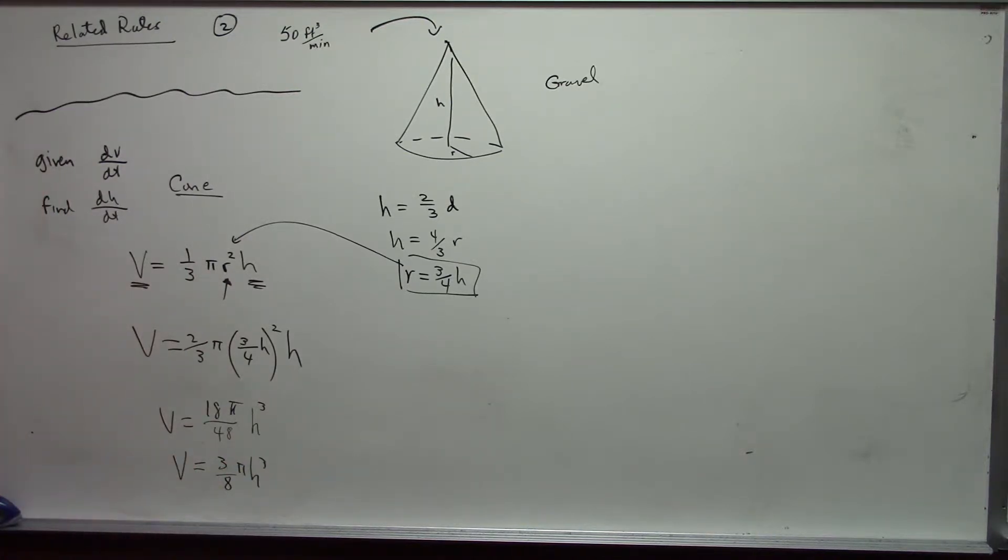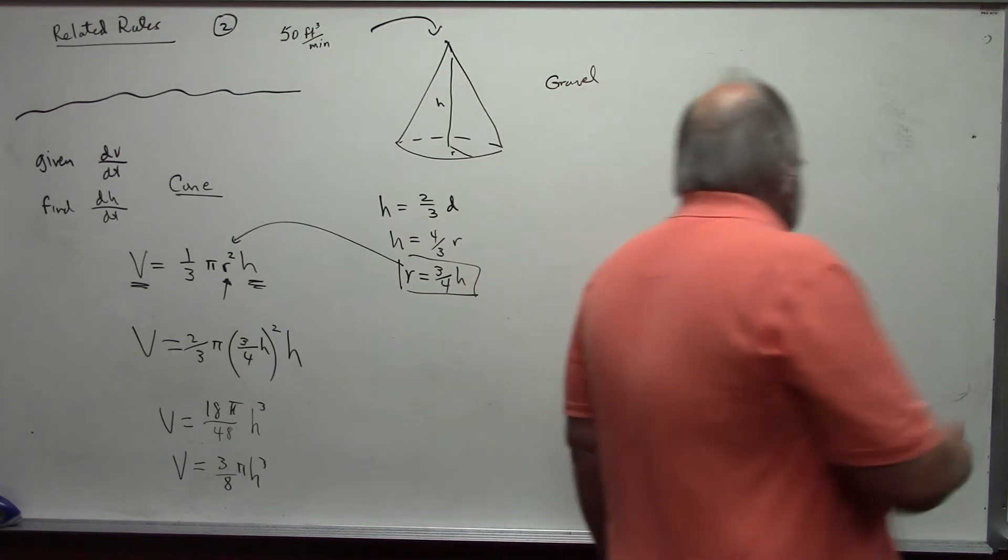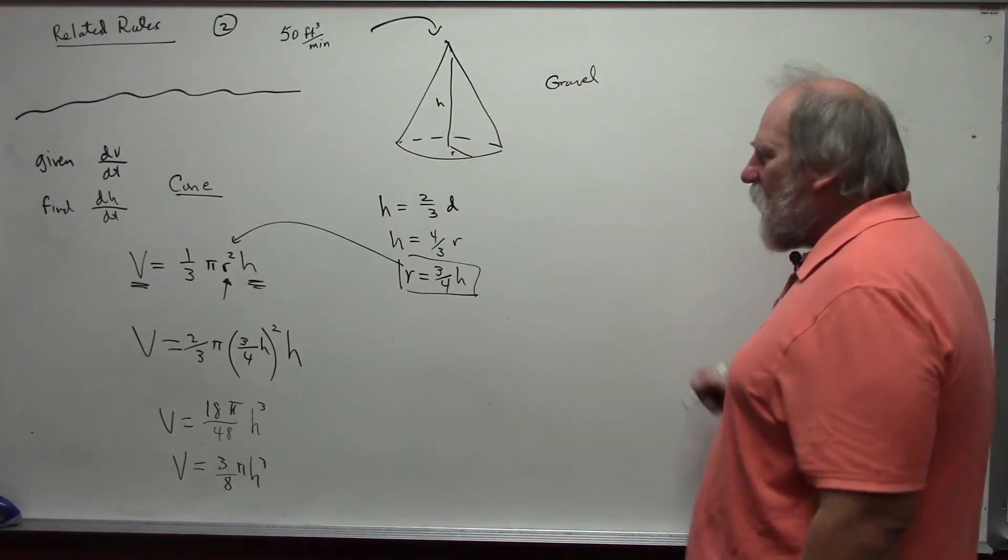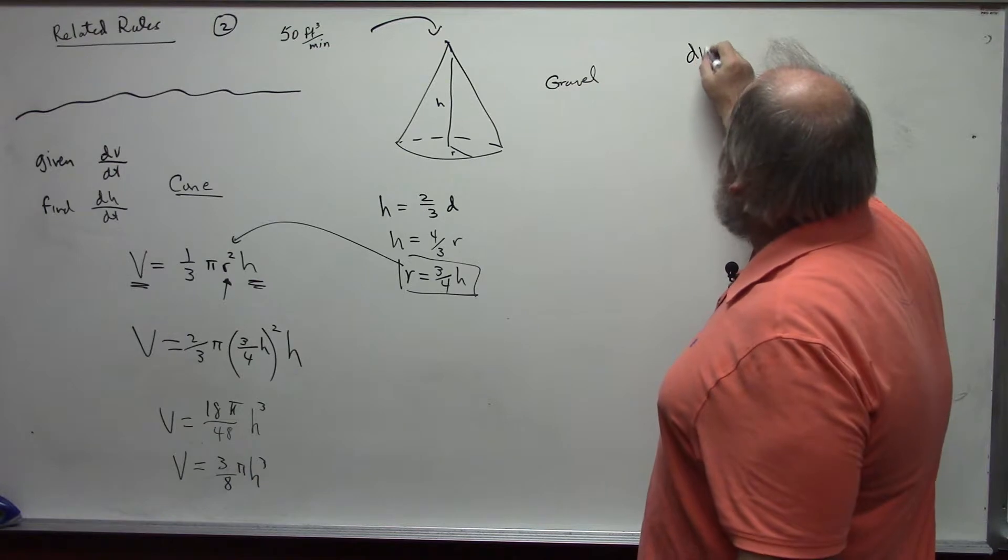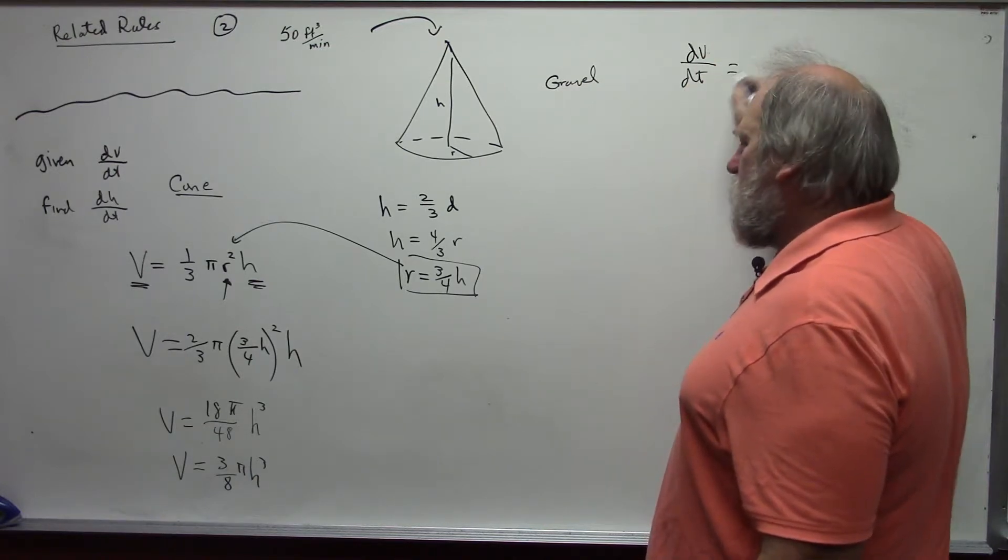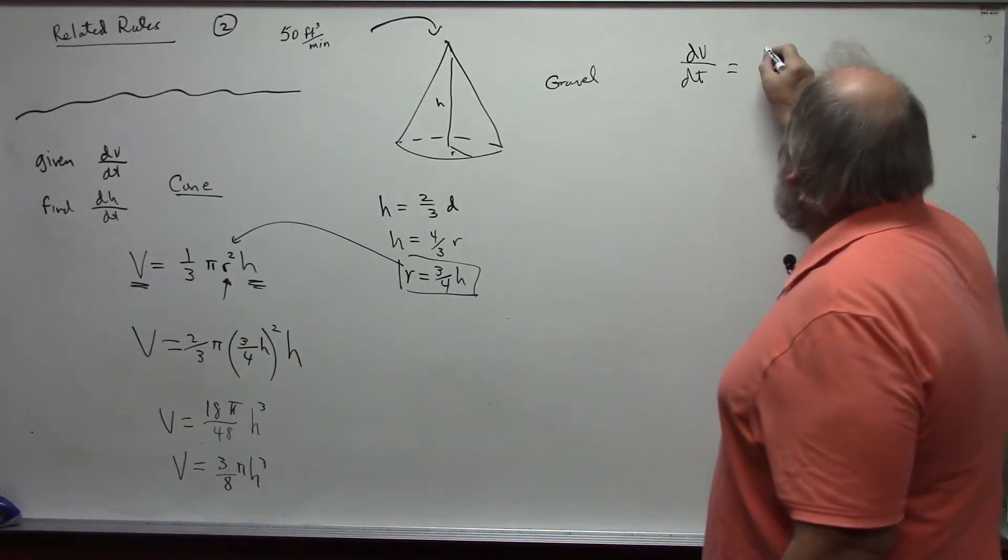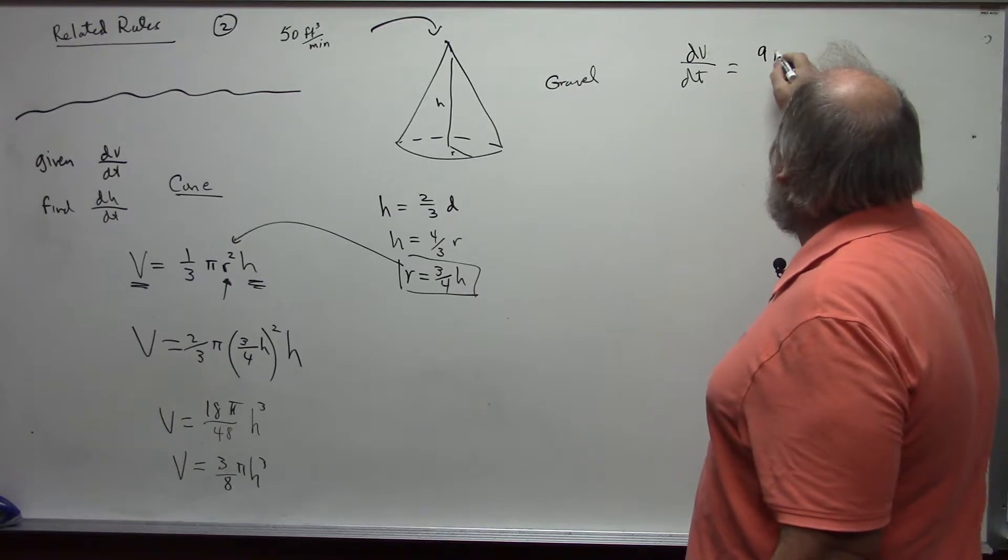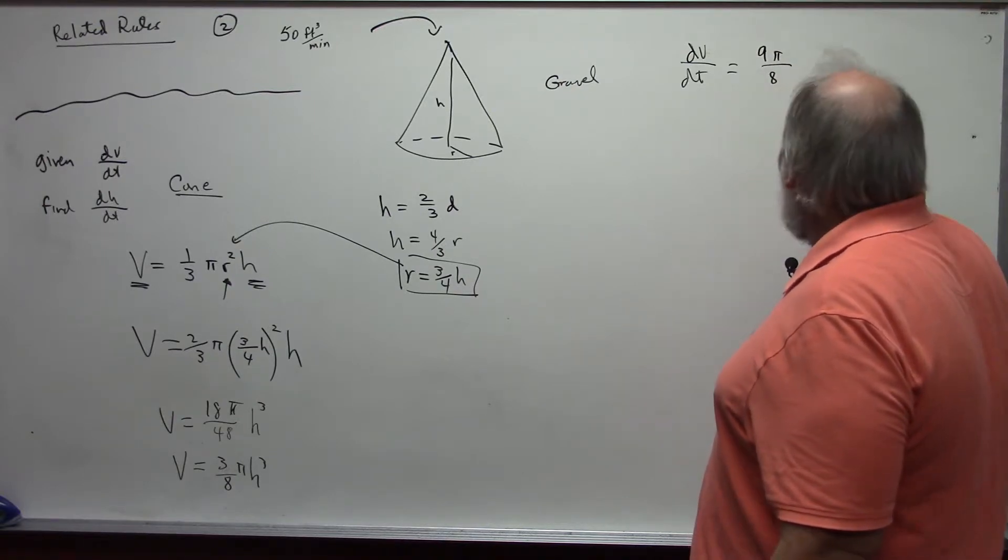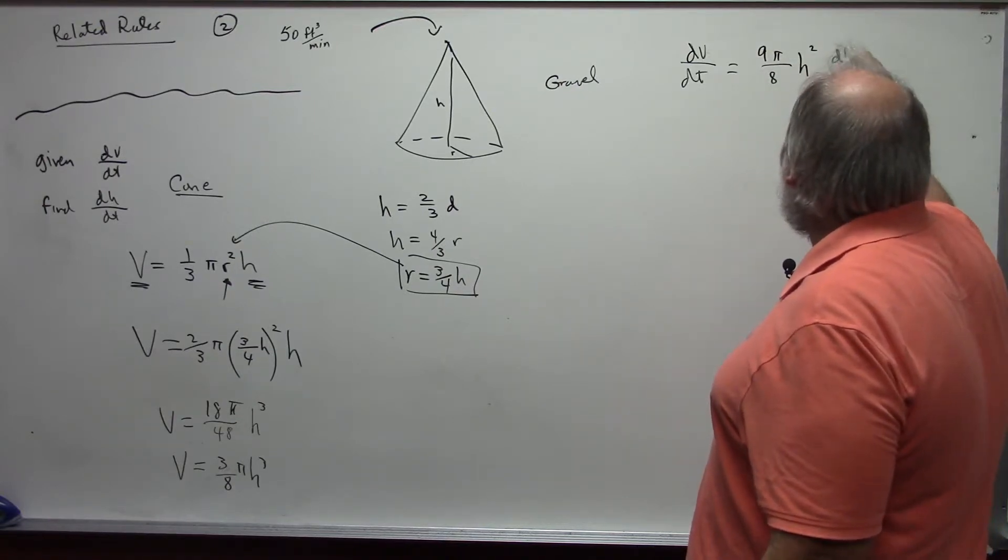Now, I have an equation that only involves the important variables. So, at this point, I will take the derivative with respect to t, time. And we get dv/dt is equal to nine pi over eight h squared dh/dt.